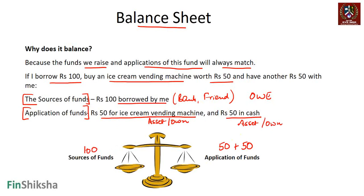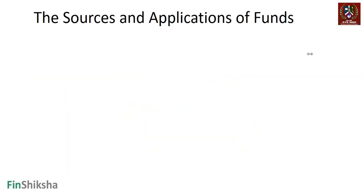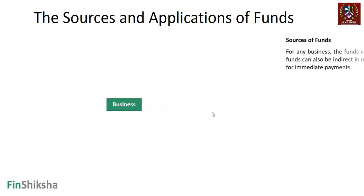The 100 rupees borrowed equals 50 rupees in the machine plus 50 rupees in cash - there's no other use. Once a balance sheet is available, any activity the business does will either hit both sides, or rearrange items on one side. We'll explain this in more detail as we go along. Now let's move to understanding individual elements of the balance sheet.